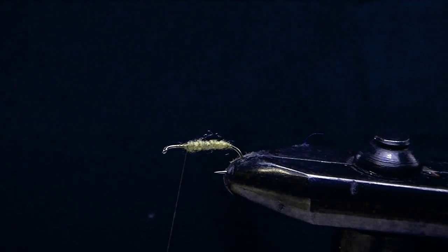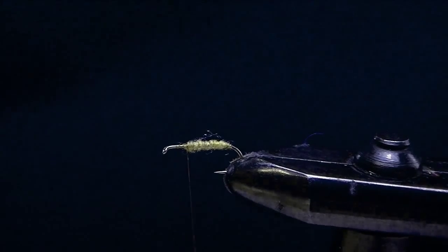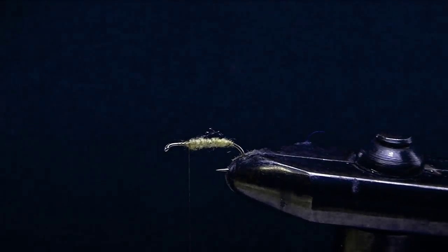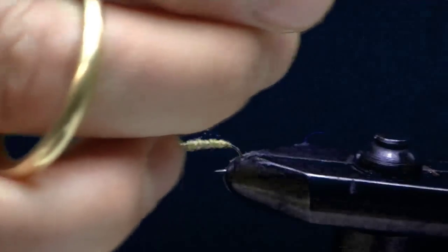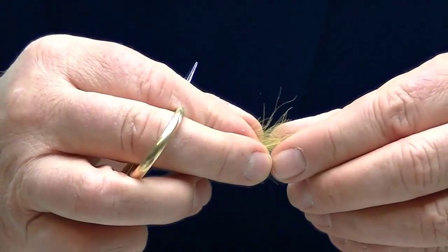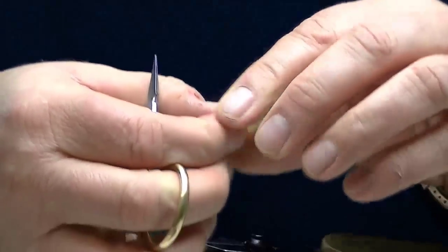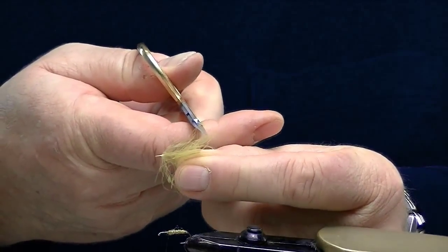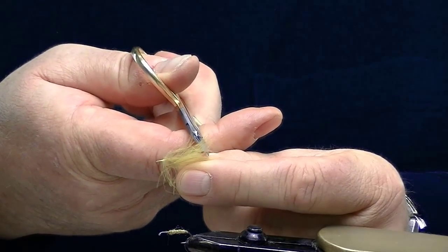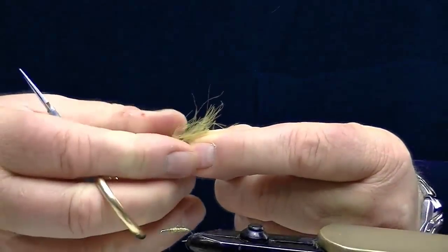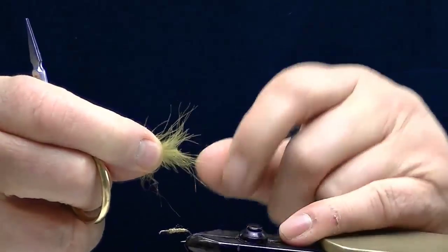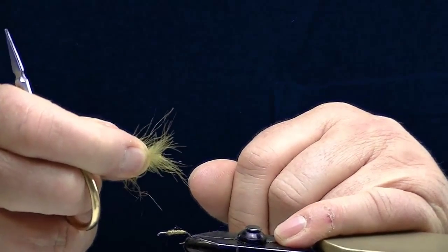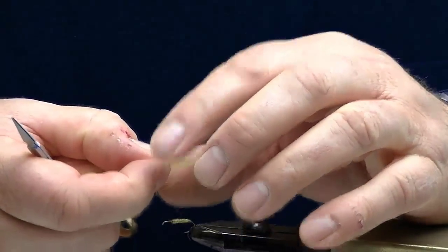Next we're going to do a CDC hackle and what I've done is I've already matched these feathers up from a previous fly I just tied. And what you do is you go in with your scissors and you clip the stem and not the rest of the feather which creates kind of a V. You can stack 2, 3, 4, 5 CDC feathers like that.